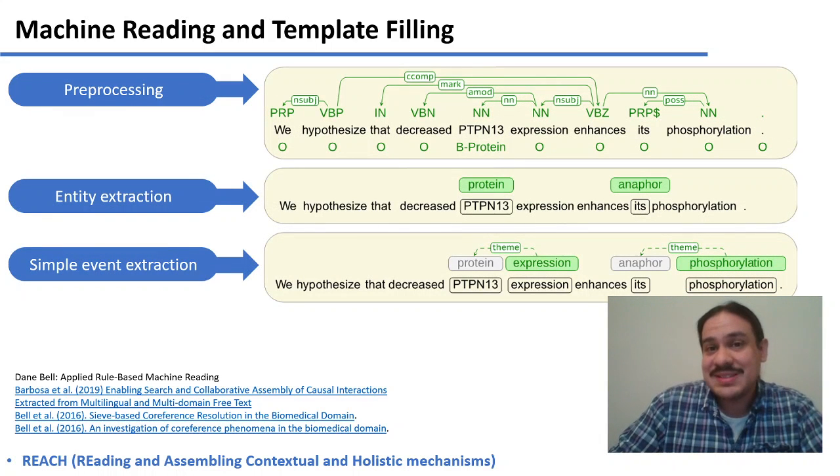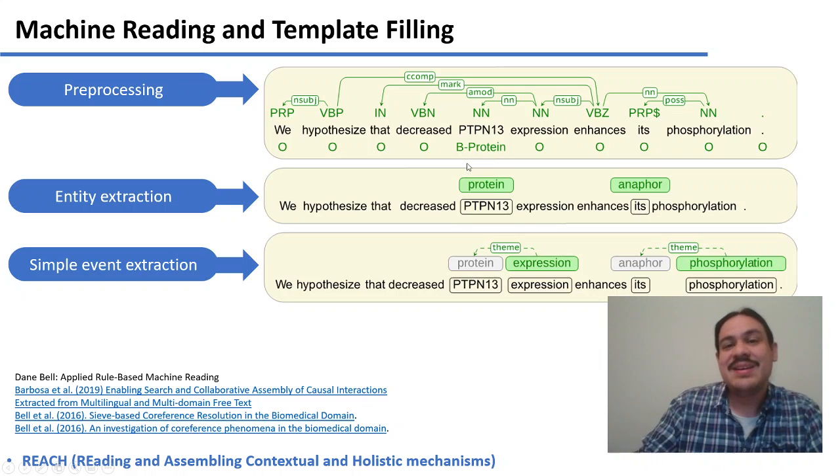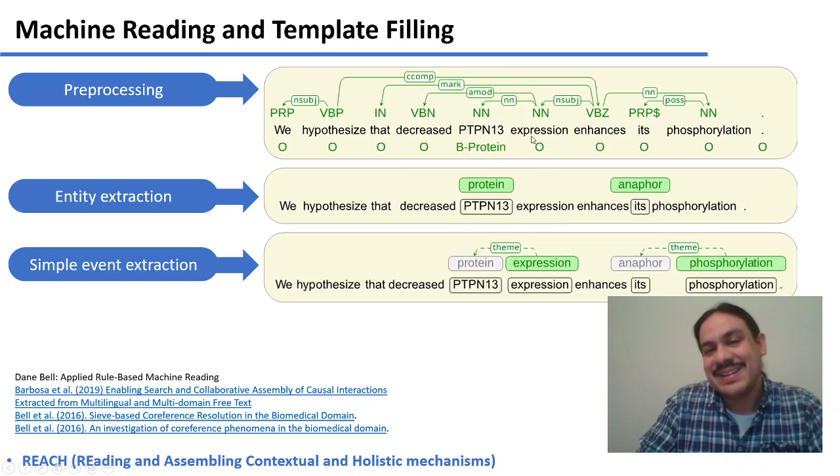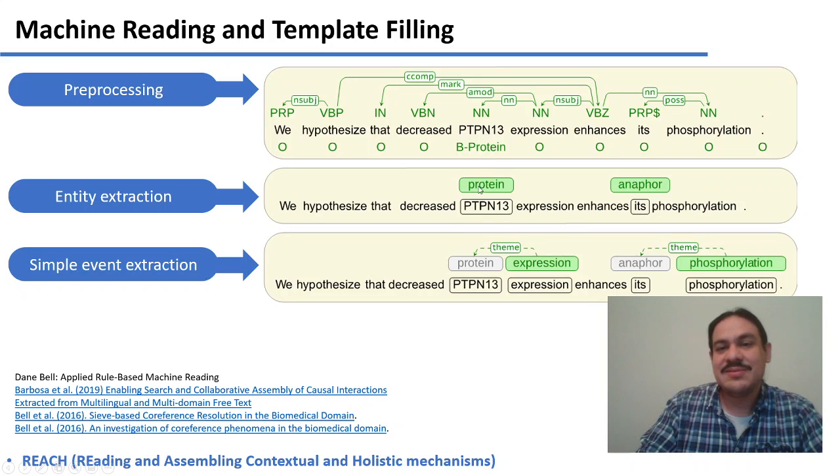The process to do this is essentially what we've been doing during this week. First, the text is pre-processed by doing dependency parsing and part of speech tagging. There's a process where they use IOB tagging to find whether something is the beginning word of a protein or outside of a protein word. Having done this, they perform entity extraction, extracting, for example, that this is the name of a protein.